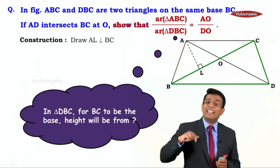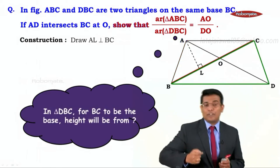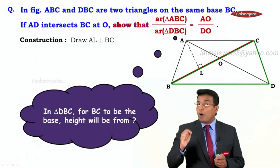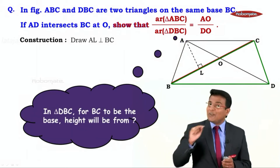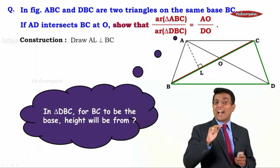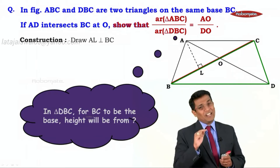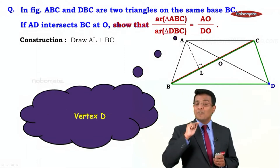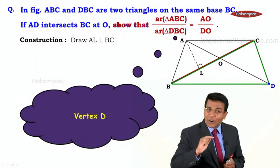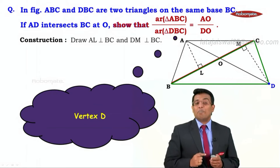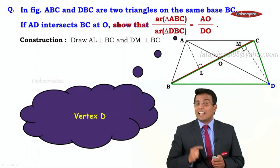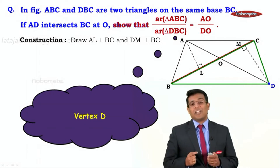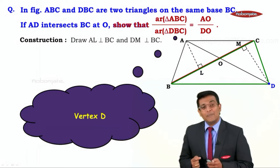Now for the next triangle, DBC, for BC to be the base, the height will be drawn from D. So from D, we draw a perpendicular on BC — that is our next construction — DM perpendicular to BC.